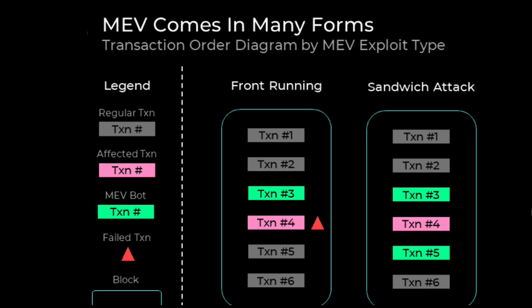There is also another well-known attack in the MEV series of techniques called a sandwich attack. In a sandwich attack, a malicious miner anticipates a price increase by wrapping a buy order with its own buy and sell order. This allows the miner to benefit from the slippage. The target transaction is in the middle — say transaction number four — and in a sandwich attack, two transactions are placed before and after it, making profit from the slippage.